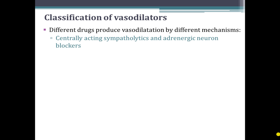Centrally acting sympatholytic drugs and adrenergic neuron blockers produce vasodilatation by inhibiting the central release of norepinephrine, and ultimately vasoconstriction does not take place and vasodilatation occurs. Alpha blockers block the alpha receptors located in the vascular smooth muscles, so there is unopposed beta action and ultimately vasodilatation. Calcium channel blockers produce vasodilatation by inhibiting calcium entry into vascular smooth muscle, inhibiting vascular contraction, and ultimately producing vasodilatation.